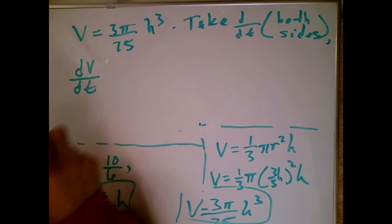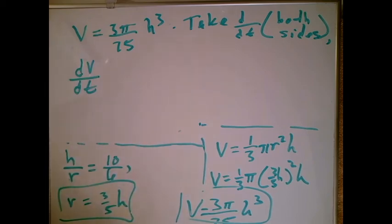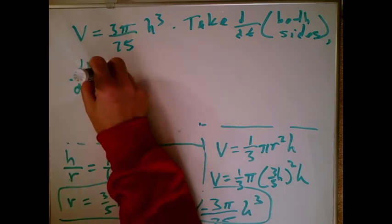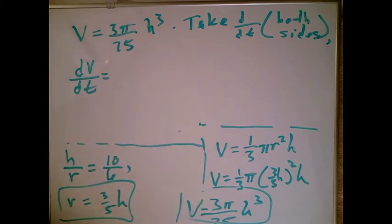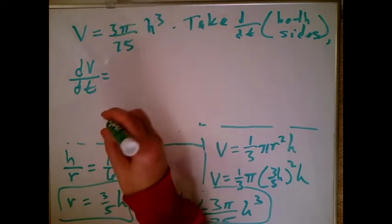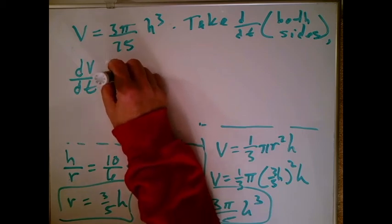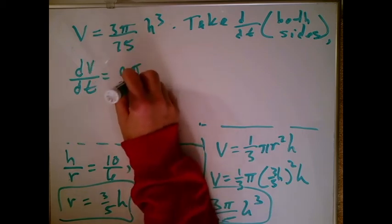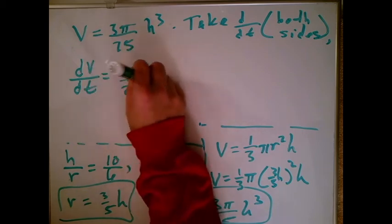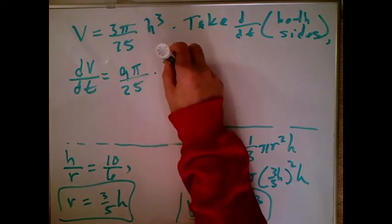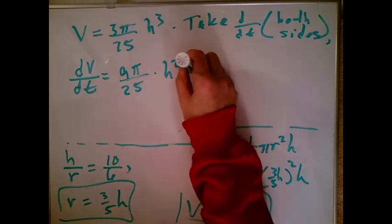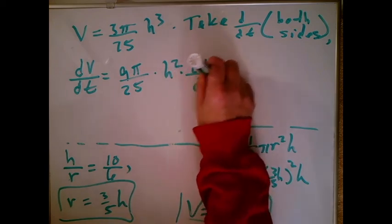Now, if you don't like not using the chain rule, you can say, look, what I have is the derivative of blob. Well, the derivative of blob is 1. The derivative of V is 1 times the derivative of V. So if you want to put a little 1 over there, you can. I'm not going to. The derivative of the right-hand side, well, the 3 pi over 25 is the coefficient, so it goes along for the ride. The 3 comes down. So this is the derivative of 3 pi over 25 times blob cubed. It's going to be 9 pi over 25 times blob squared times the derivative of the blob.